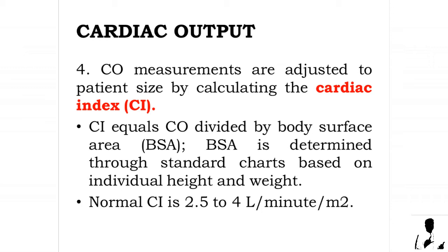Cardiac output measurements are adjusted to patient size by calculating the cardiac index (CI). Cardiac index equals cardiac output divided by body surface area (BSA). Body surface area is determined through standard charts based on individual height and weight. Normal cardiac index is 2.5 to 4 liters per minute per meter squared.